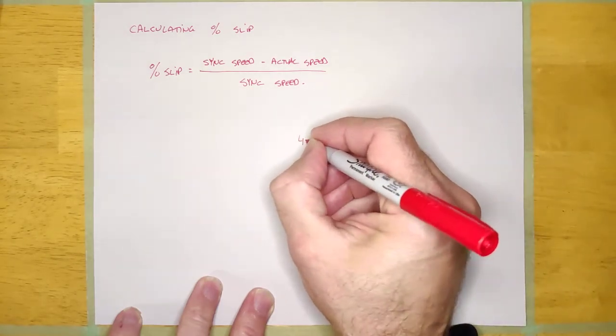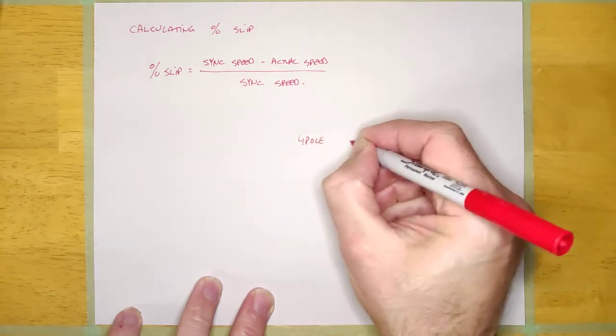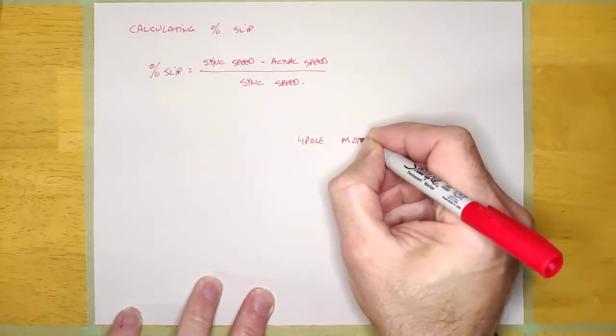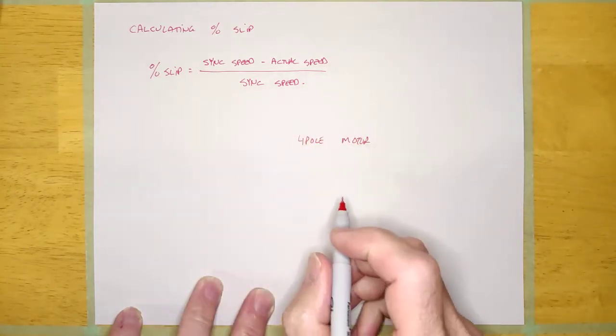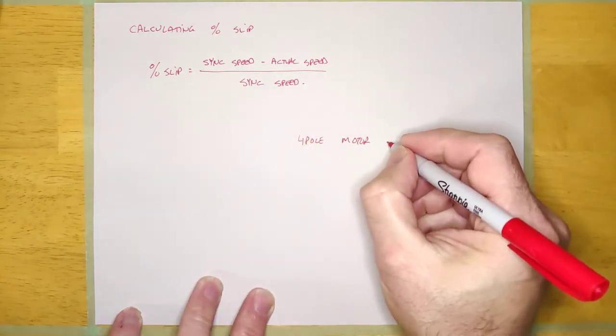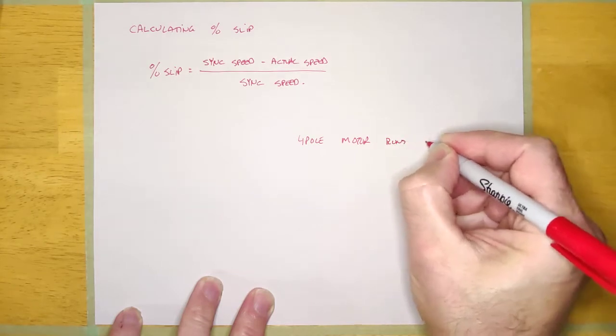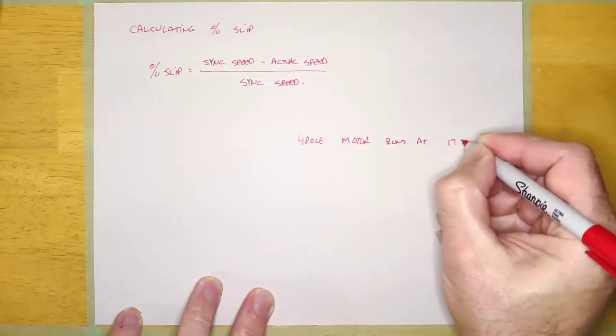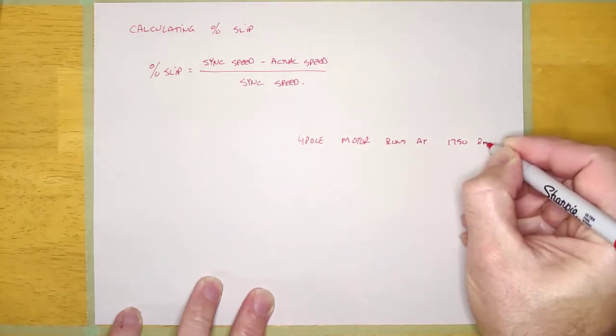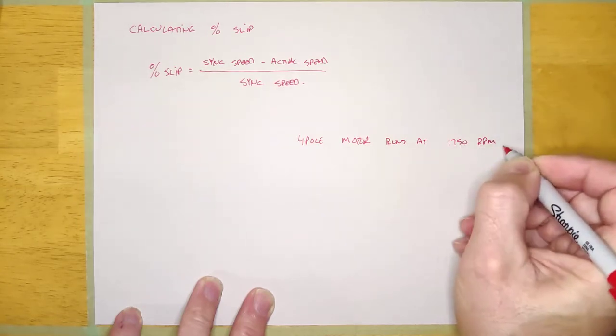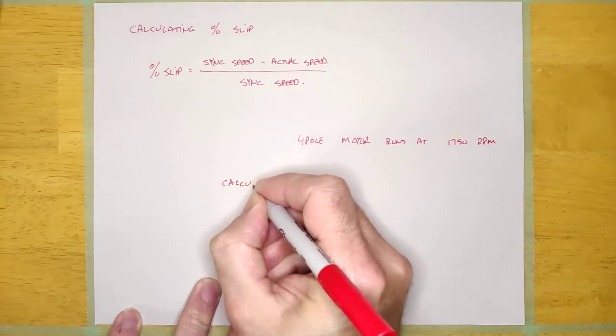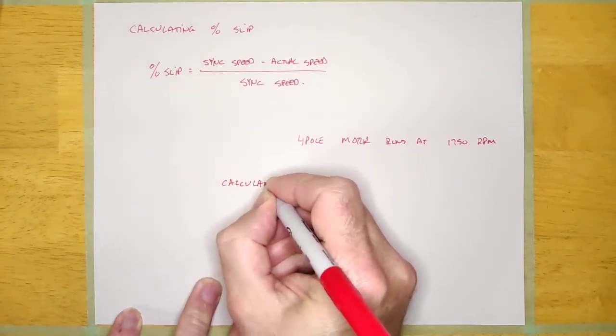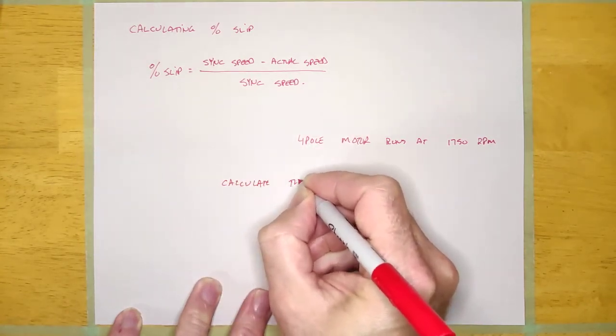Let's say I have a four-pole motor, and it doesn't matter if it's single-phase or three-phase, it's going to be the same formula, and it runs at 1750 RPM. In other words, that's the nameplate value. So calculate the percent slip.